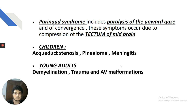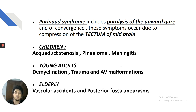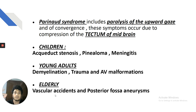In young adults with Parinaud syndrome, think demyelination — multiple sclerosis — trauma, and malformations. In the elderly presenting with visual gaze symptoms and Parinaud syndrome, think vascular accidents — hemorrhages due to stroke or CVA, embolic phenomena, cerebral amyloid angiopathy — which is exclusive to the elderly and causes lacunar infarcts — and posterior fossa aneurysms.